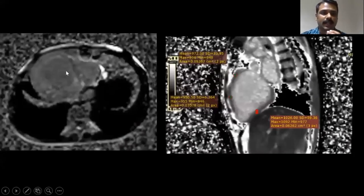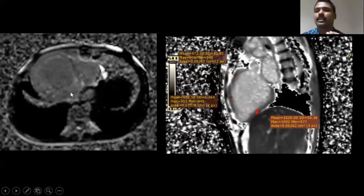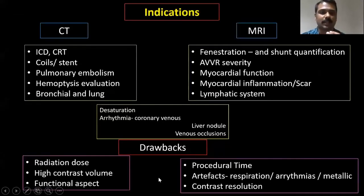In the delayed enhancement sequences, there is diffuse subendocardial enhancement of the left ventricle. T1 mapping did not show any focal myocardial abnormalities suggesting myocarditis or amyloidosis. This was therefore consistent with a cardiomyopathy in this patient.